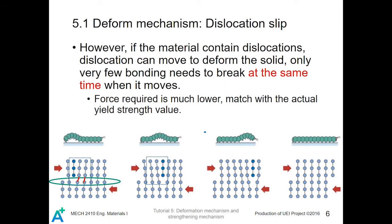Therefore, a new deformation mechanism is proposed, and it is actually related to dislocation movement within a crystalline solid. If the material contains dislocations, the dislocation itself can move to deform the solid under external force, and only very few bonds need to break at the same time when it moves. That means the force required is much lower, which matches with the actual values, for example, for shear strength.